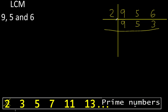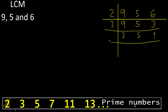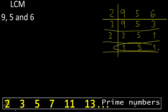Can be divided by 3. 9 divided by 3 is 3, and 3 divided by 3 is 1. 5 cannot be divided by 3, therefore equal. Divided by 3 is 1. Cannot be divided by 3.